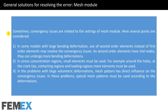Sometimes convergence issues are related to mesh module settings. In some models with large bending deformation, using second-order elements instead of first-order elements may resolve convergency issues, since second-order elements have mid-nodes and can undergo more bending deformation. Small elements must be used in stress concentration regions such as around holes, at crack tips, contacting regions, and loading regions. In problems with large volumetric deformations, the mesh pattern directly influences convergency, and spatial mesh patterns must be used according to the expected deformations.